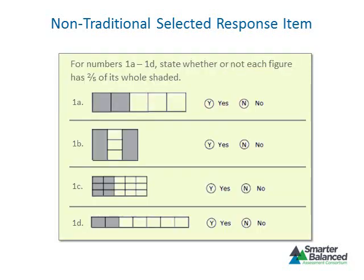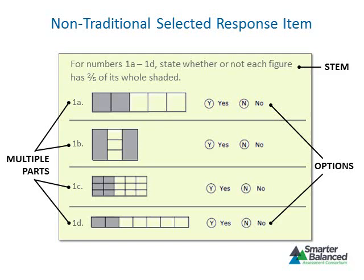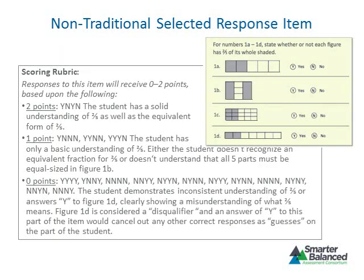Another non-traditional selected response format has a stem, multiple parts, and two options for each part. The stem directs students to decide whether or not the model in each part answers the question. There are sixteen different ways to respond to this item, making guessing the correct answer much less likely than for a traditional selected response item. The scoring rubric indicates the item is worth two points, awarded based on the level of understanding a student demonstrates.